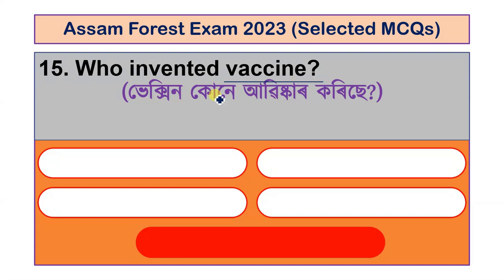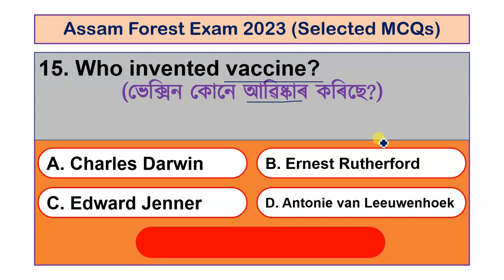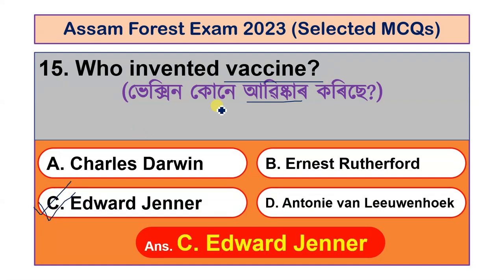Question number 14: Who invented the vaccine? Options are Charles Darwin, Ernest Rutherford, Edward Jenner and A.B. Leeuwenhoek. The correct answer is option C, Edward Jenner, who invented the vaccine.